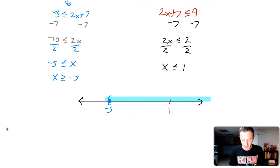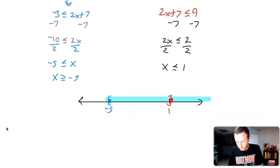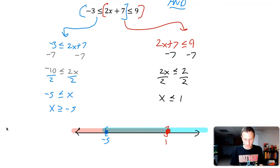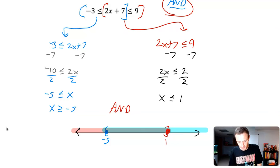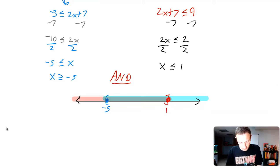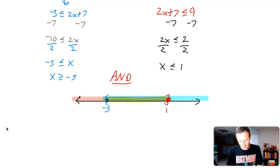For x is less than or equal to positive one, I use a closed circle or bracket at one and highlight all the values less than or equal to positive one, going out to the left. Since this is an 'and' problem, I want to find where the overlap happens. The overlap is right in between — from negative five, which was going out to the right, and from positive one, which was going out to the left.